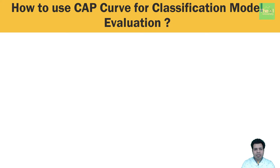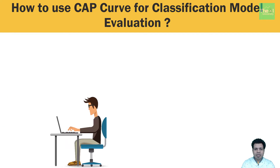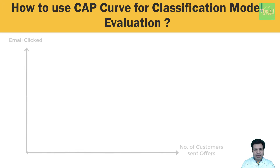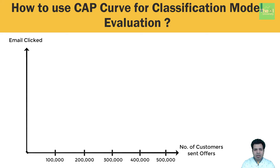Let me explain the cumulative accuracy profile concept from a classification model evaluation perspective using two scenarios. Let's consider scenario number one where you are working as a data scientist for an e-commerce company. This company has 500,000 customers — let's keep this number on the horizontal x-axis. While explaining the intuition behind logistic regression, I took an example of whether a customer is going to click on an email offer or not, and I'm going to use that analogy in this video as well.